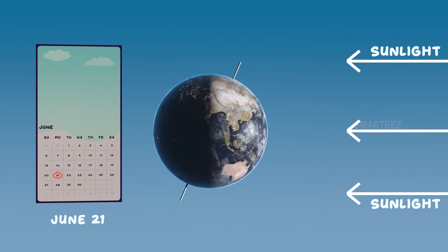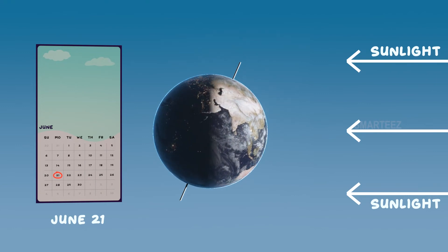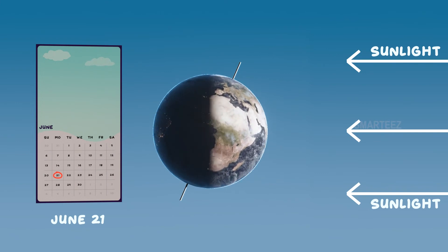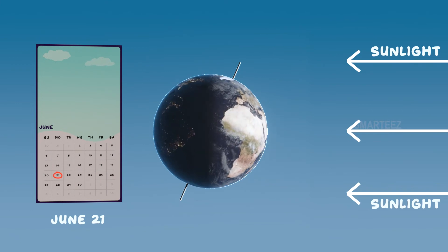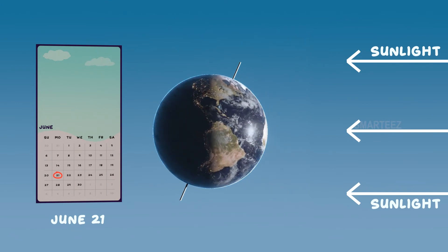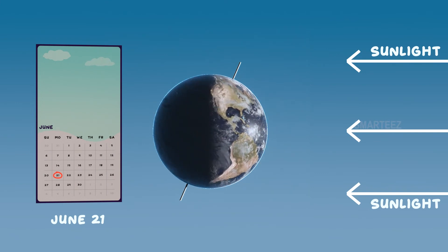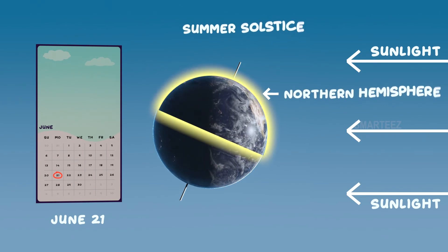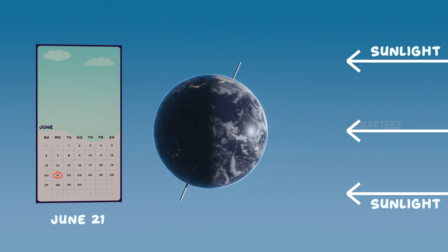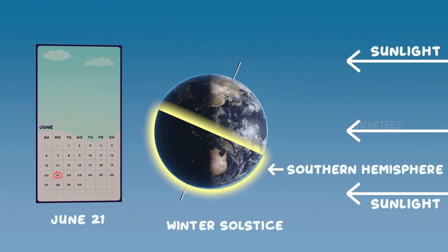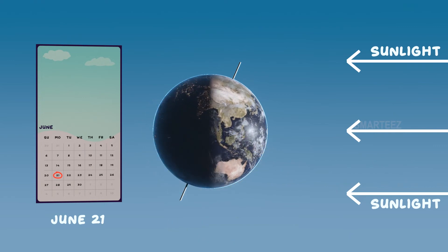Yes, we do. However, the official start of summer is on June 21st. Summer solstice usually occurs on this day in the northern hemisphere, and winter solstice occurs in the southern hemisphere.